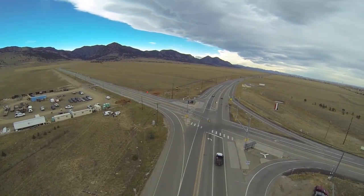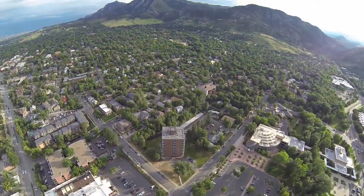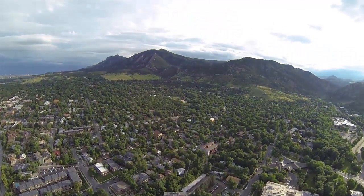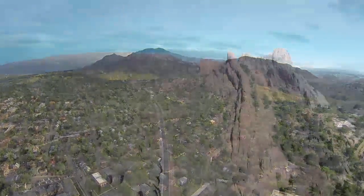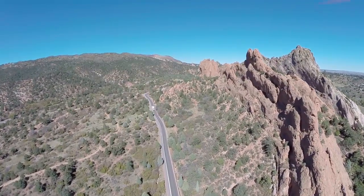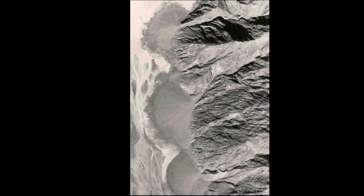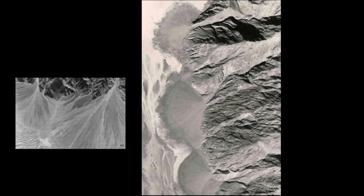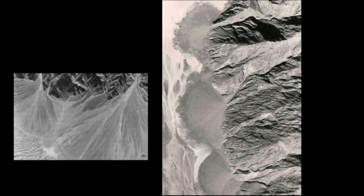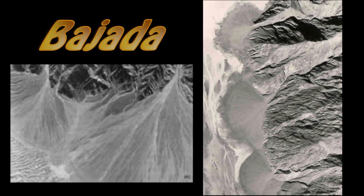The Fountain Formation is not limited in locality to Red Rocks Park. This rusted formation makes up the red Flatirons to our north around Boulder, and it makes up the red rocks on the west side of the Garden of the Gods in Colorado Springs to our south. We shouldn't think of this as a single alluvial fan, but as several fans that overlap each other to become an extensive apron of sediment at the base of the ancestral Rockies. We call this form a Bajada.